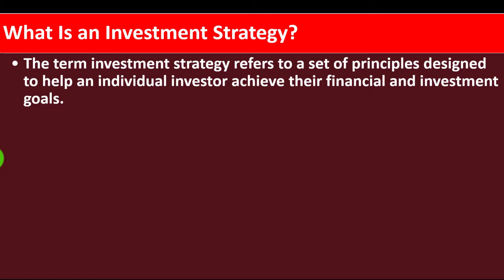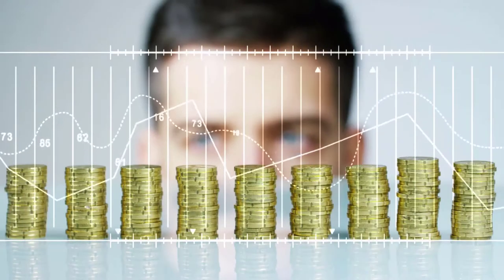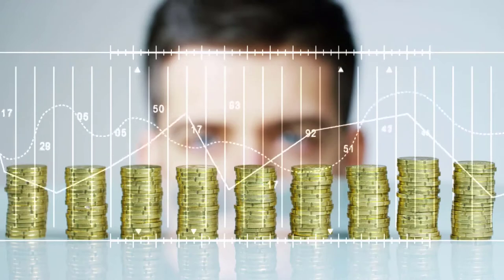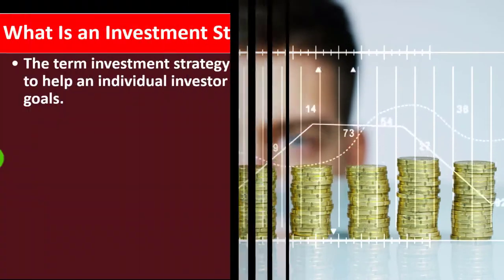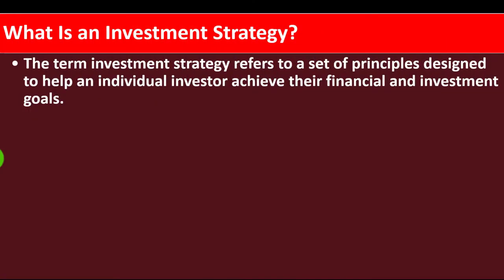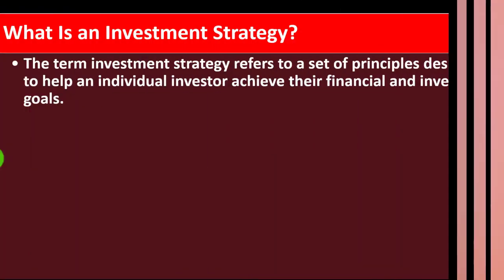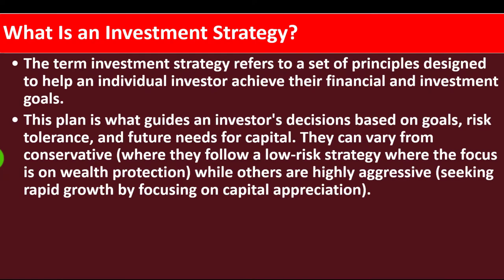When we're thinking about investment in general, we want to think about what our goals are — what are we trying to achieve? Retirement goals, other targeted goals such as saving for college tuition, for example. And once we have the goals, we want to think about what's the approach, what's the strategy we're going to put in place in order to achieve them.